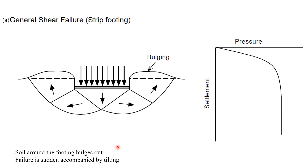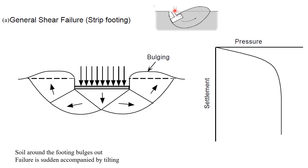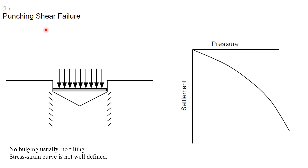In general shear failure, the soil around the footing bulges out and failure is sudden, accompanied by tilting. On a pressure-settlement curve, at a certain applied pressure the soil fails suddenly. In punching shear failure, there is no bulging and no tilting; the stress-strain curve is not well-defined and pressure and settlement keep on increasing without a well-defined failure point.